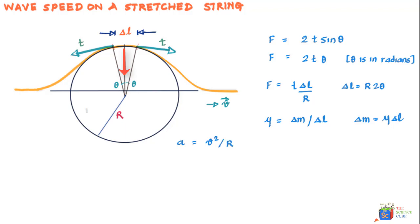If we use Newton's second law of motion, which says that force on a mass equals the product of its mass into its acceleration, and if we use this equation and substitute the values of F which we've established, let's put F as T × Δl / R.